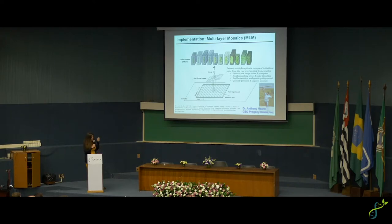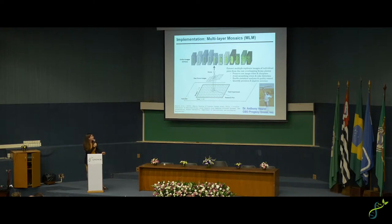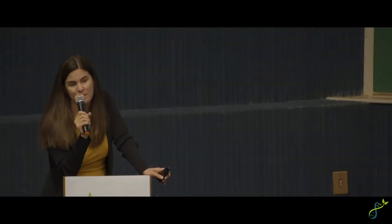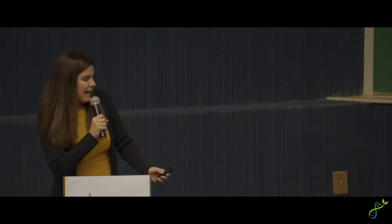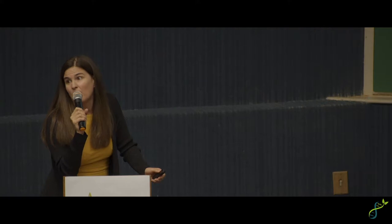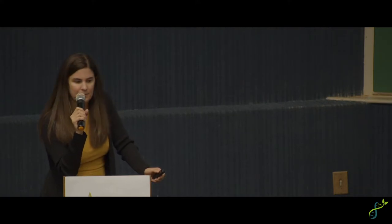A lot of the drone work initially involved Keith Cherkauer's student Anthony Hurst, who developed an image processing pipeline called multi-layer mosaics. As the drone flies over your research plot, it collects multiple overlapping frame photos — RGB and multispectral — with a targeted overlap, usually around 80%. You have a lot of redundant information so that you can stitch images together.